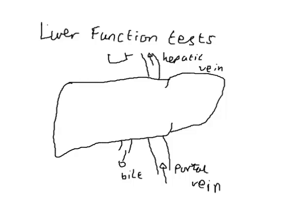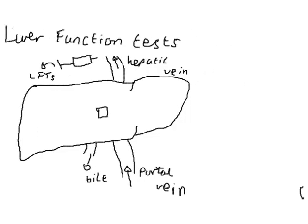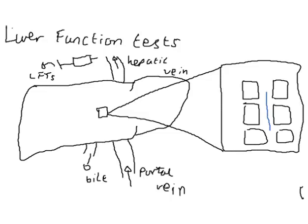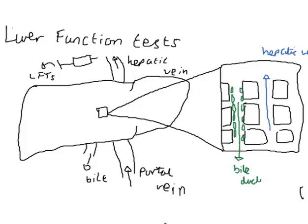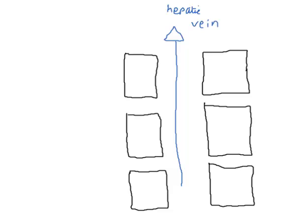Liver function tests are taken from a blood sample which comes from the systemic circulation, so they measure anything in the blood which gets secreted into the hepatic vein. Taking a closer look, the blood flows in through the portal vein and along sinusoids, which are lined by hepatocytes, coming out the other end into the hepatic vein. Sitting on the other side of the hepatocytes are the bile cannulae, lined by their own special epithelial cells. Bile is produced into these cannulae, which then flows in the opposite direction to blood.